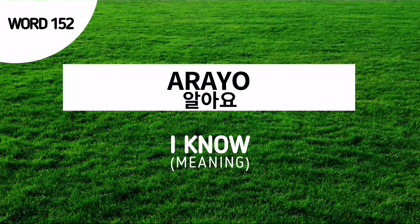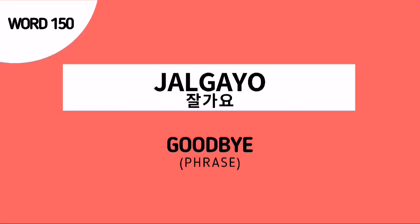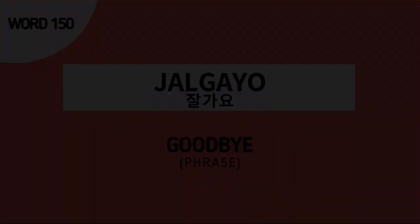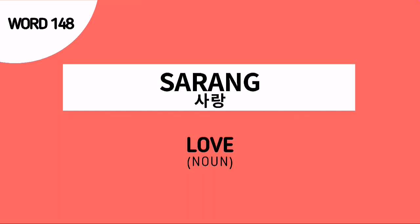Word number 152 is arayo, used to say 'I know.' Word number 151 is amado, which means 'maybe.' Word number 150 is jalgayo, which means 'goodbye' or 'please go well.' Word number 149 is hanbeon, which means 'once.' And the last for our review, word number 148 is sarang, and this is the Korean noun for love.